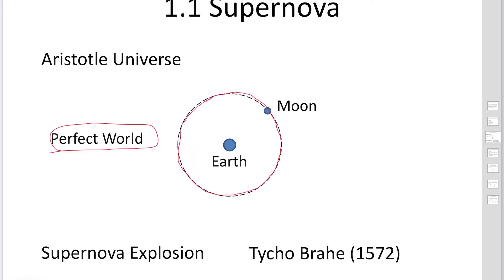In the perfect world, a thing can keep its position, and the shape of objects is a circle. In the imperfect world — inside of the orbit of the moon — things can be broken and things fall to the ground. This is the Aristotle universe.